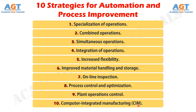The 10 strategies constitute a checklist of possibilities for improving the production system through automation or simplification. They should not be considered mutually exclusive. For most situations, multiple strategies can be implemented in one improvement project. You will be seeing these strategies implemented in the many systems that will be discussed throughout this whole course on automation and CIM.